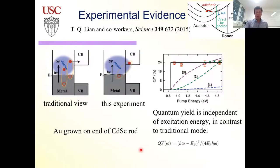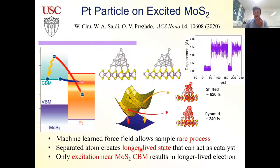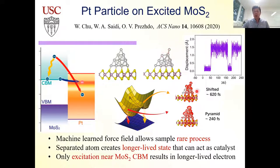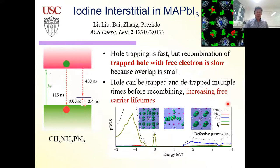In recent plasmonic work, we run long MD trajectories based on machine learning force fields and identify events where an atom moves away from its normal equilibrium location. When it's displaced, the lifetime of a particular state close to the conduction band edge of MoS2 is two to three times longer-lived, which may help explain why plasmonic effects exceed simple heating from the plasmon energy.